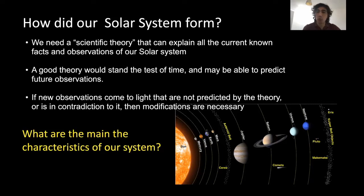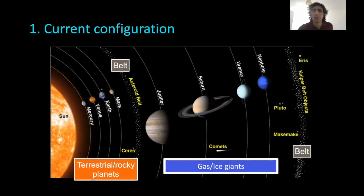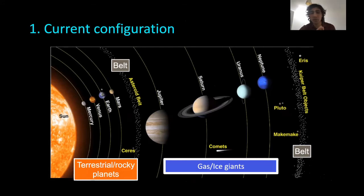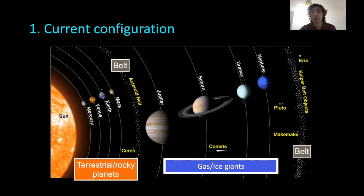What are the main characteristics of our own solar system that we would need our scientific theory to explain? First is the current configuration. The major planets are grouped into two main groups: the inner planets closer to the sun — Mercury, Venus, Earth, and Mars — which are predominantly made up of rocks and metals. Then we have an outer group of gas and ice giants, which are larger in size but less dense, and not just composed of rocks and metals but also volatiles. Jupiter and Saturn also have a considerable inventory of light volatiles such as hydrogen and helium.